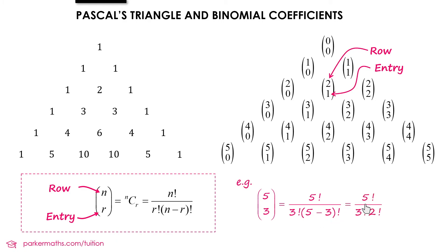we can simplify this to 5 factorial over 3 factorial times 2 factorial. And then if we do that calculation, we get 10.